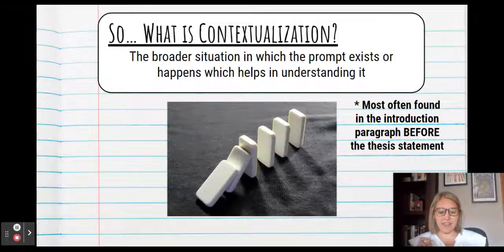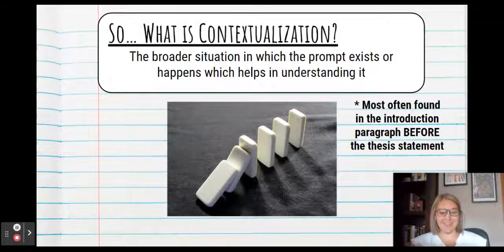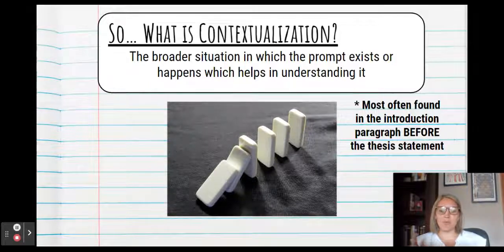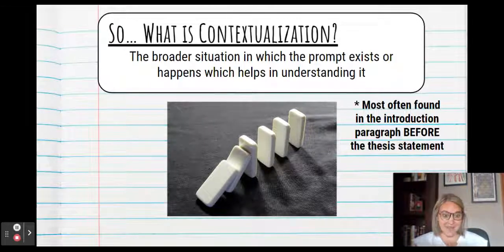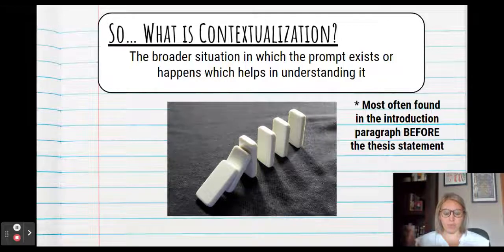So when I teach this, I teach it as the idea of dominoes. So if you ever had dominoes growing up or maybe you still play with them, but you stack them up and when you knock down one, hopefully the rest of them fall down. So the easiest way to get the contextualization point, I think, is to think about what is happening directly before the prompt and then explain that.